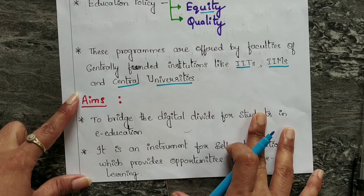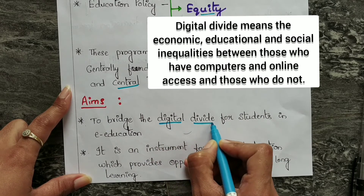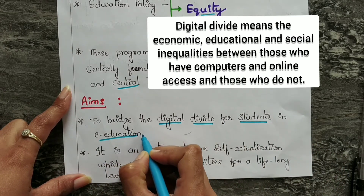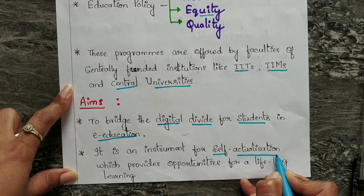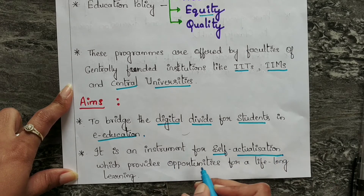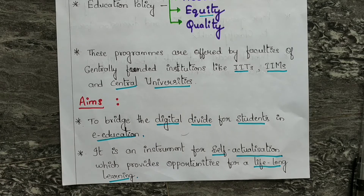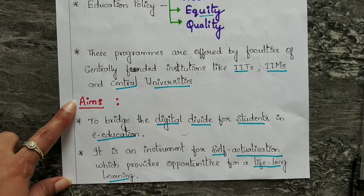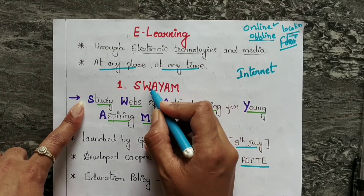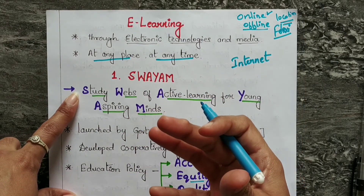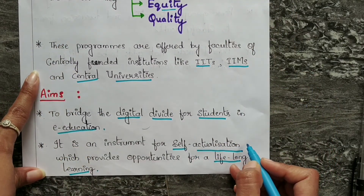The aim of SWAYAM is to bridge the digital divide for students in education. Next, it is an instrument for self-actualization, which provides opportunity for lifelong learning — you can learn at any time, any place, whenever you need. The meaning of SWAYAM itself is 'self', which relates to self-actualization.